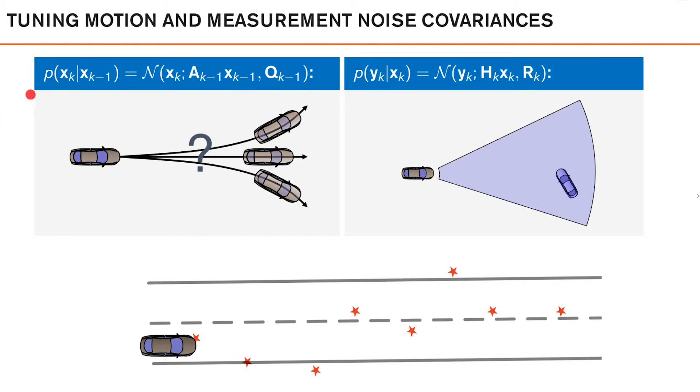If we start with the process model, in this example, the purpose of this model is to give a probabilistic model of the position of the vehicle at the current time k, given that we knew its position at the time before.